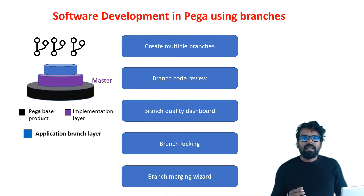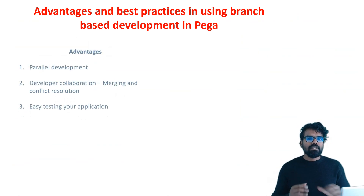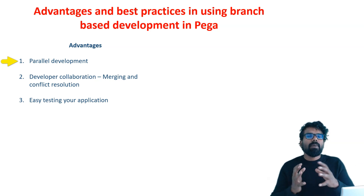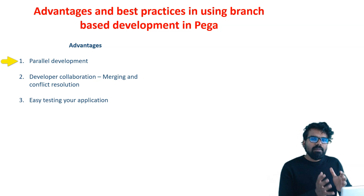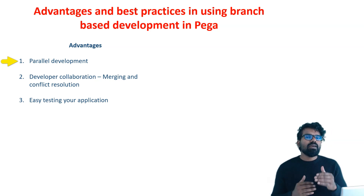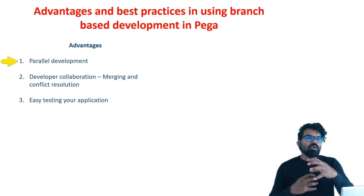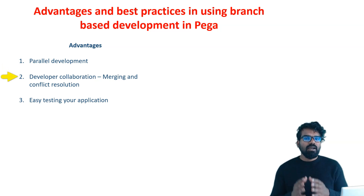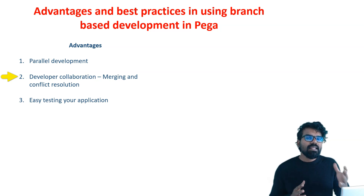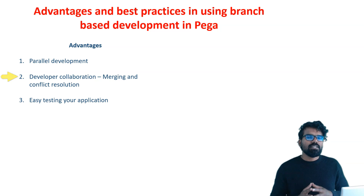Let's look at some advantages and best practices of using Pega's branch based development. The first advantage is that it supports parallel development — different developers can work on the same source code at the same time. Both developers can take a copy of the source code and do their changes; the only issue is resolving merge conflicts when they want to merge. Next is developer collaboration — when you merge changes and have a merge conflict, you can check with developers to resolve it. You can also use code review to have a four-eyes principle, where the team lead or LSA can review your code and provide comments.